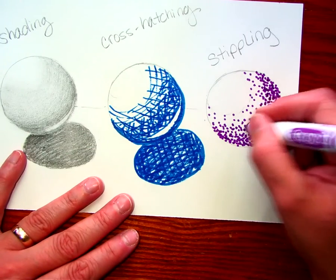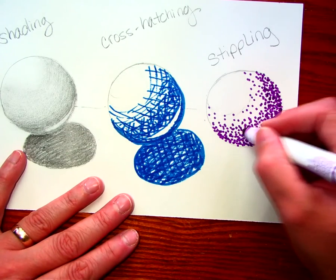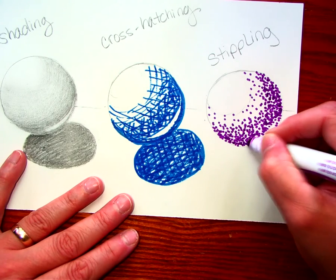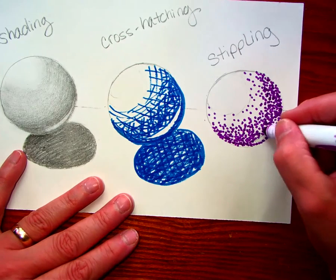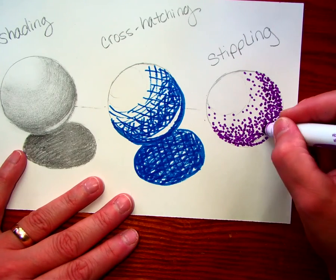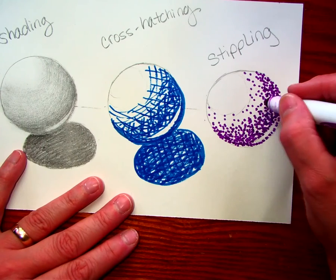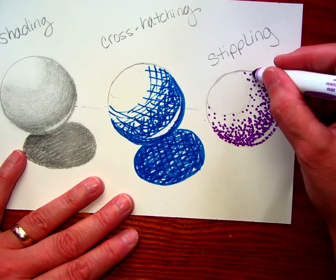You can add value with different kinds of materials using different techniques. So if you want to use, let's say, ink or marker, you can do stippling or you can do cross-hatching and add value that way to your drawings.